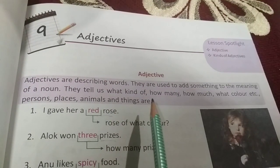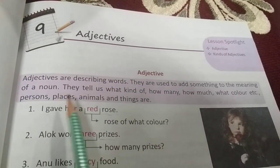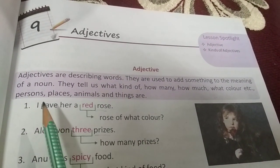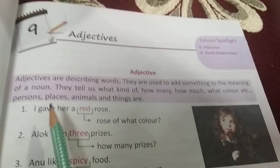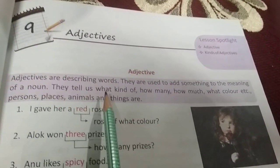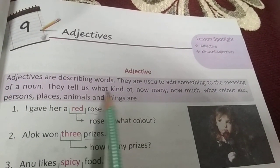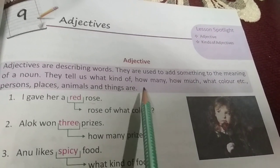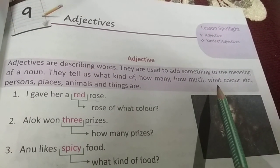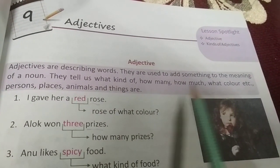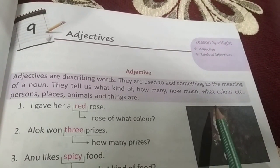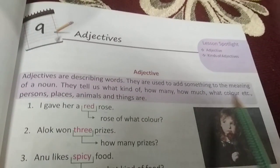The information we get about a noun comes from the adjective - what kind of person, place, animal, or thing it is. What kind of, how many, how much, what color - these are the questions adjectives answer.